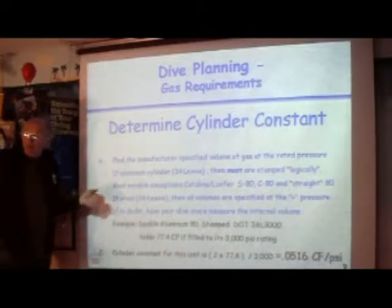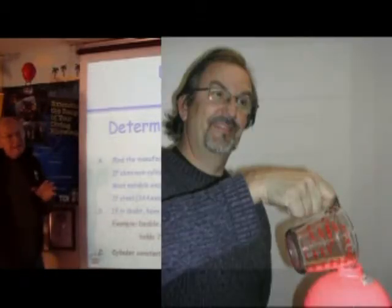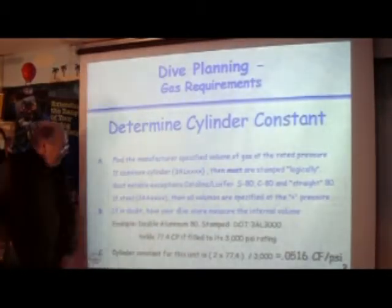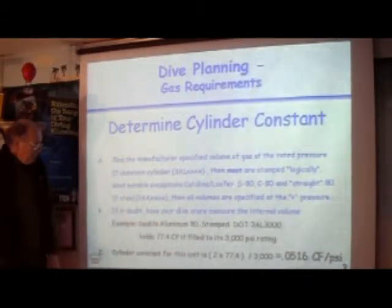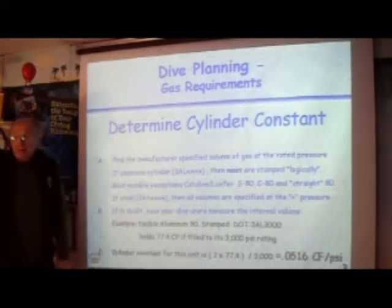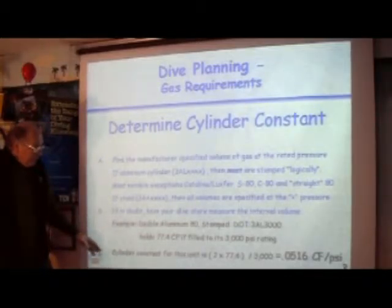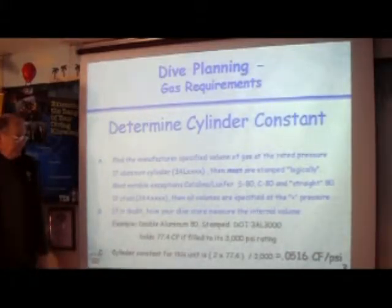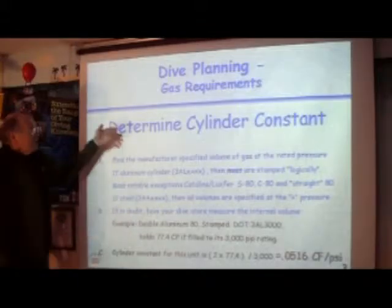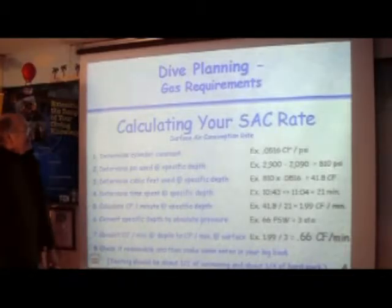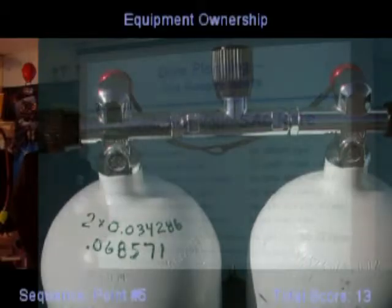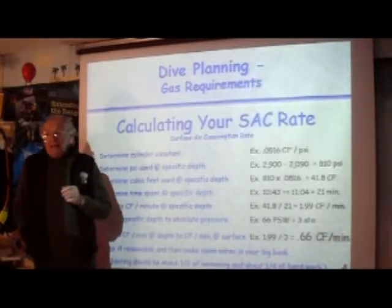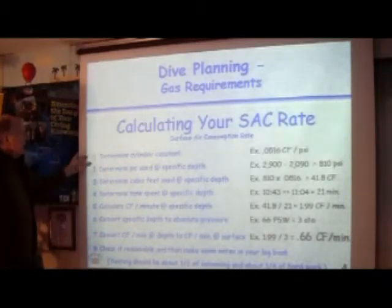In this case, let's assume that the double 80s in the question were aluminum 3000, and they would then hold 77.4 cubic feet when filled to the rated pressure. So the cylinder constant, Maria, for this unit is 2 times 77.4 divided by 3000, which equals 0.0516 cubic feet per PSI. That is the cylinder constant.